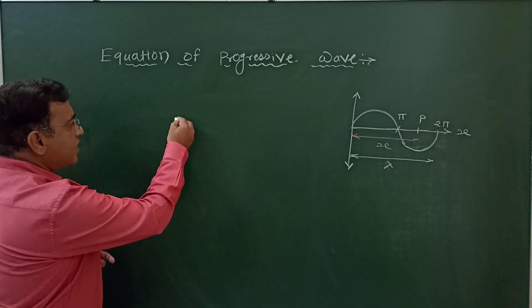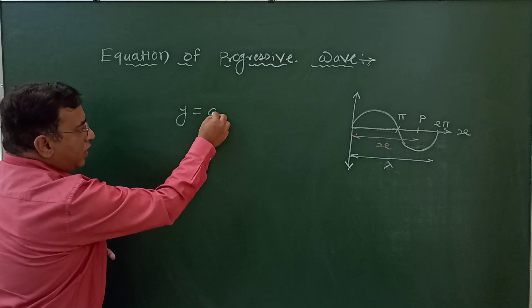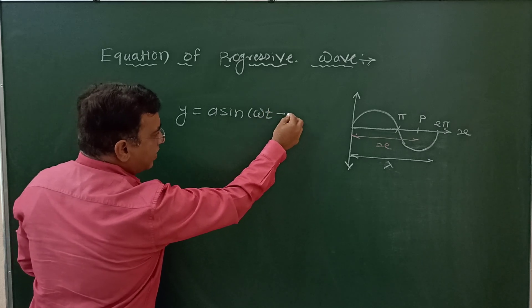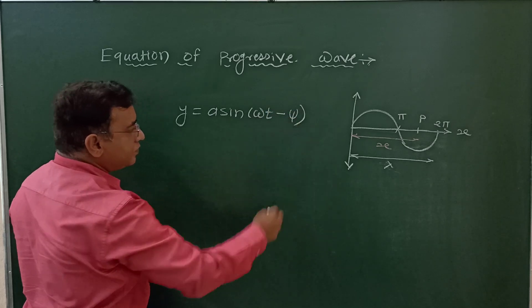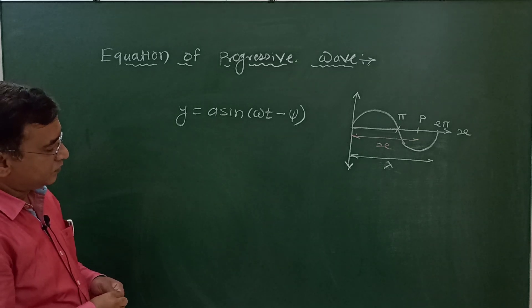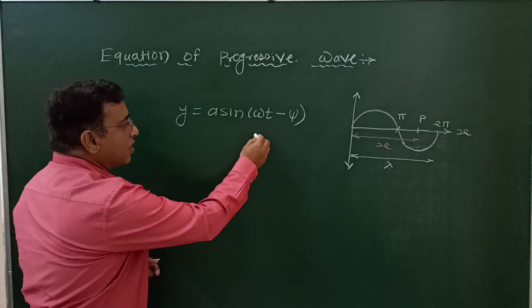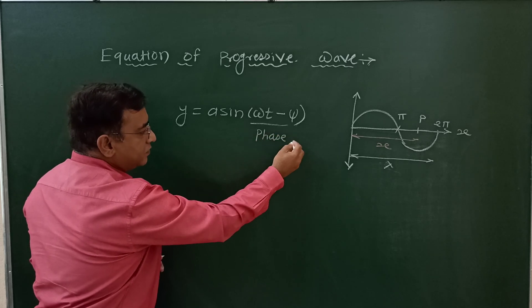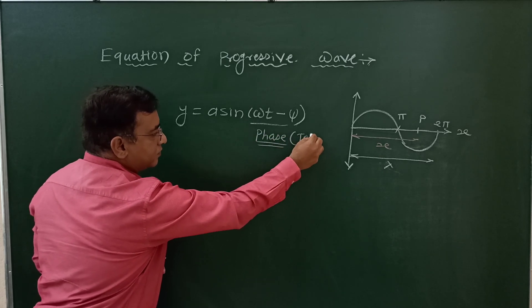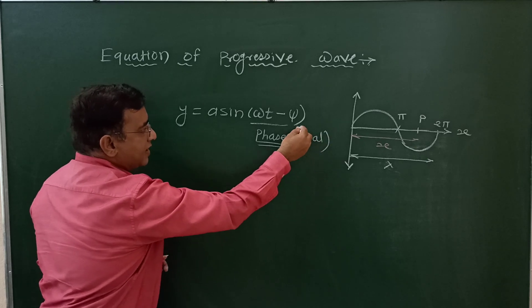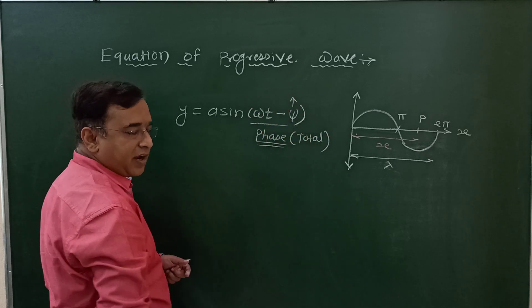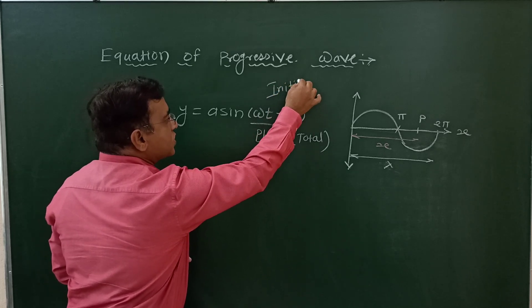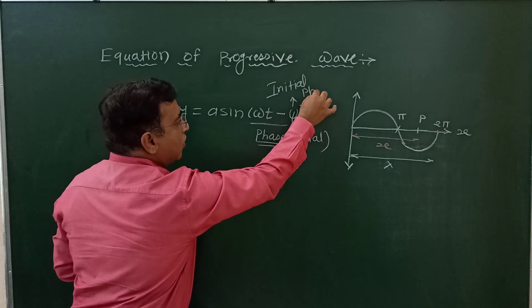The displacement equation is given by y is equal to a sine of omega t minus phi. This is the equation. Omega t plus phi represents the total phase of the equation, whereas the factor phi represents the initial phase of the wave.